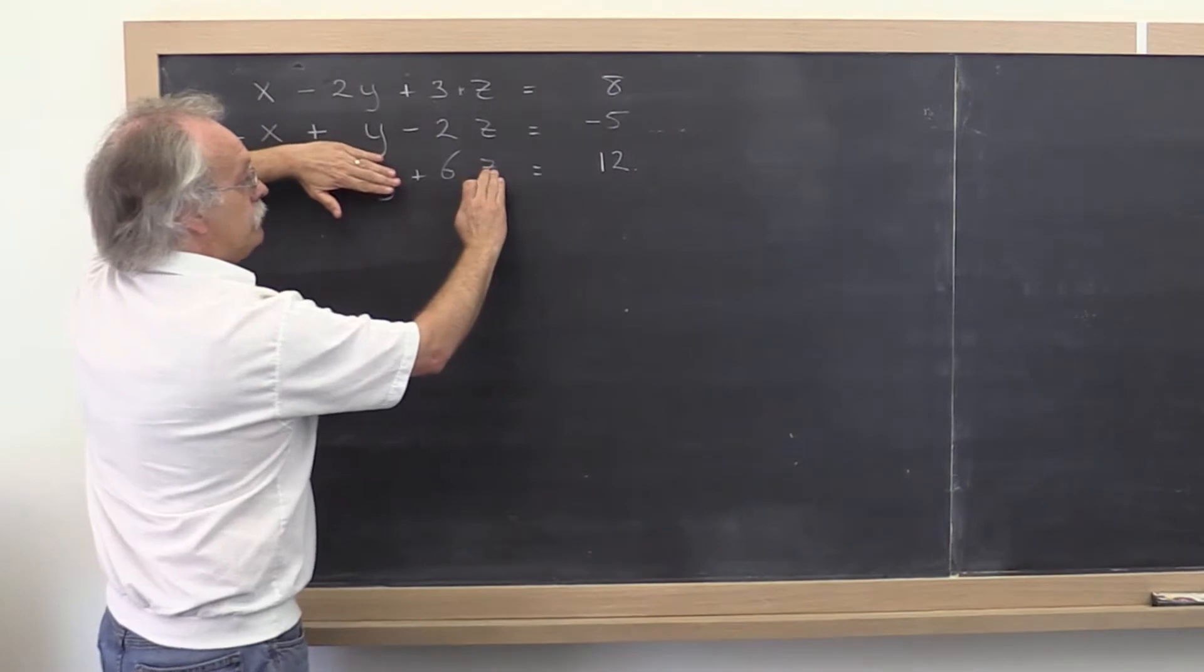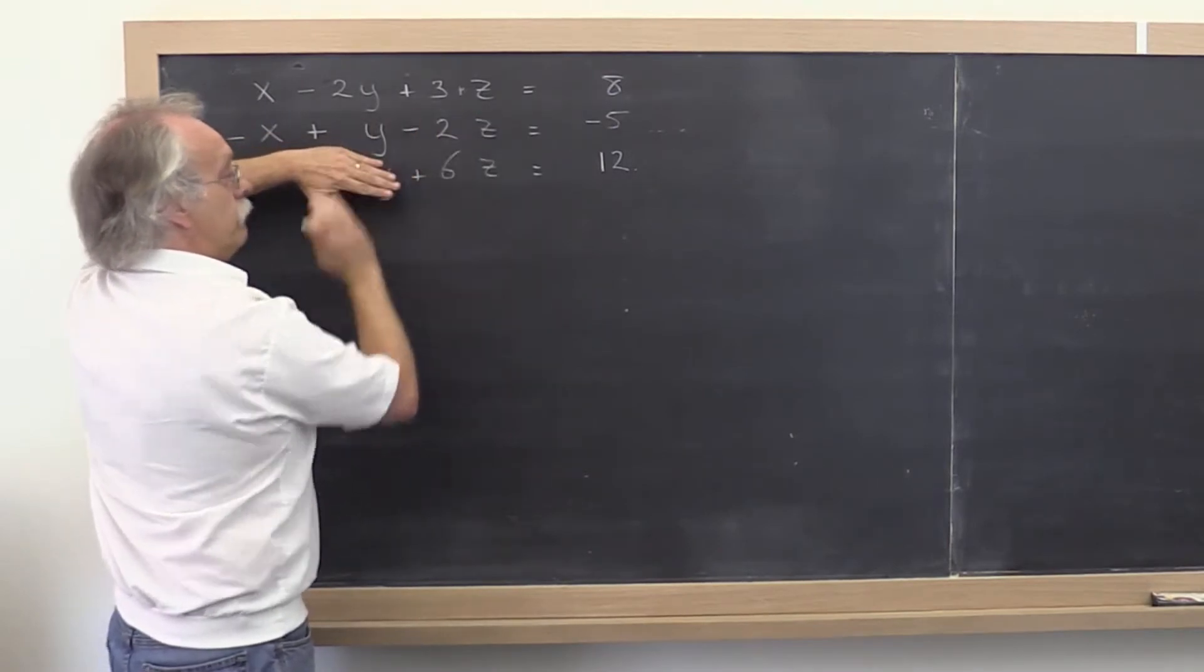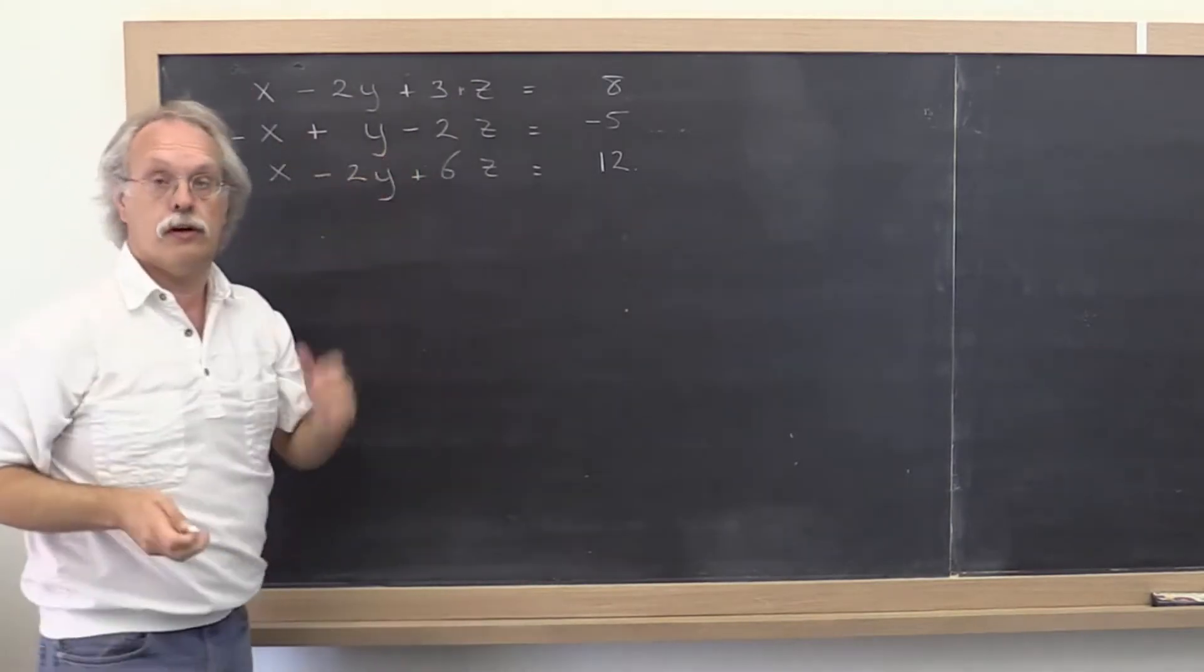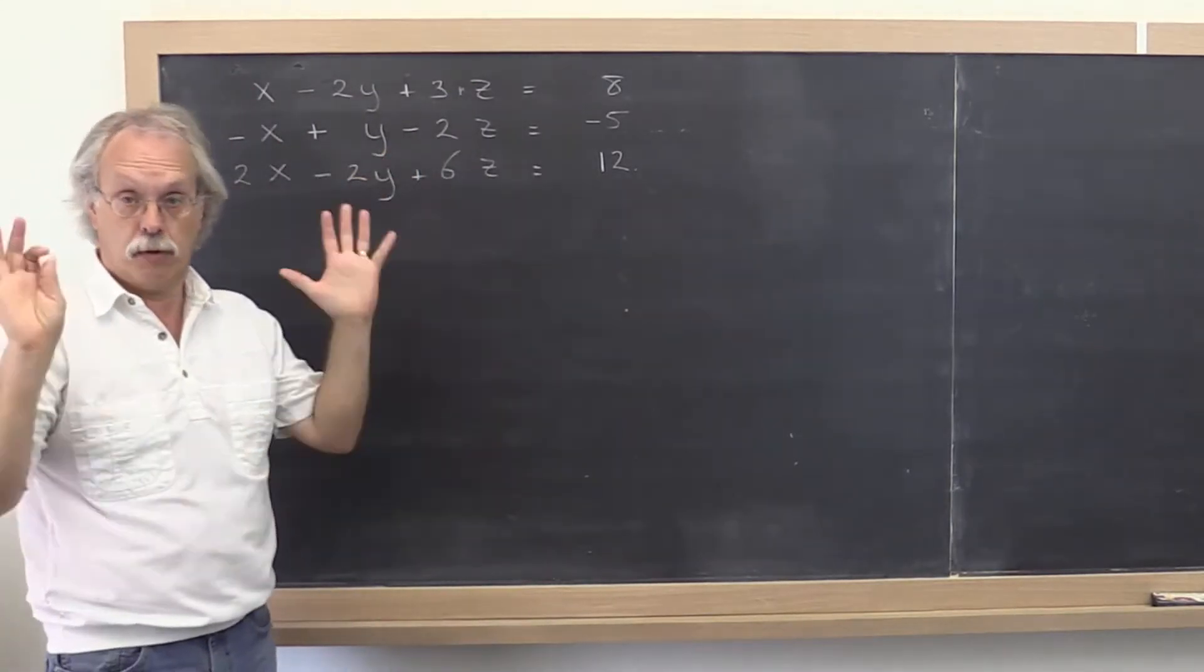And then you could solve for z. And once you know what z is, you can solve for y. And once you know what y is, you know what z and y are, and therefore you can solve for x. It's coming back to you.